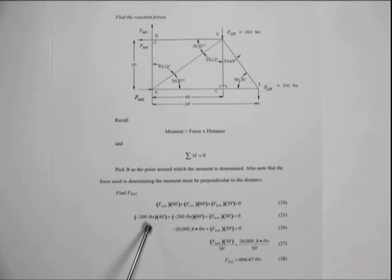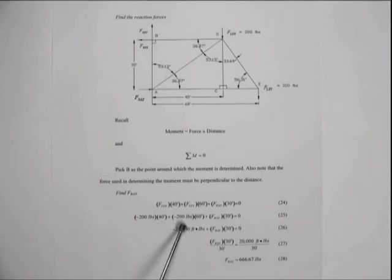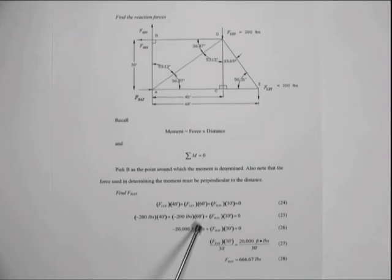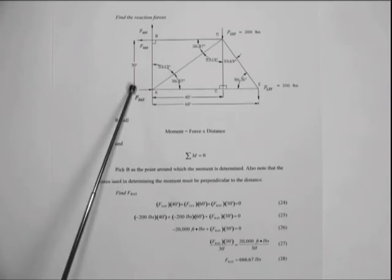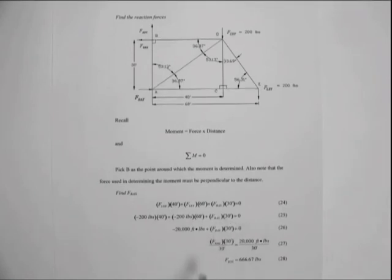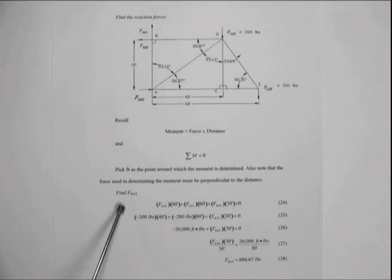Substituting in the values for our forces: the force LDY is in the downward direction, so it is negative, times its distance of 40 feet; added to the force LEY, also downward and negative, times the 60 feet distance from point B; plus the reactive force RAX times its distance of 30 feet, all equal to zero. Solving and isolating the force RAX, we arrive at a value of 666.67 pounds force in the X direction.